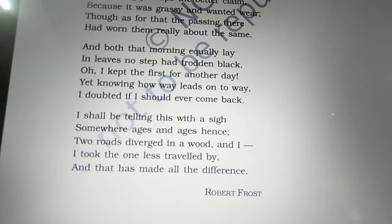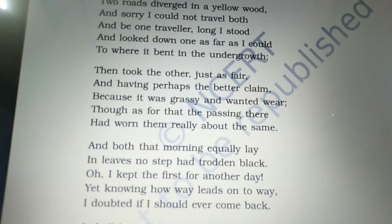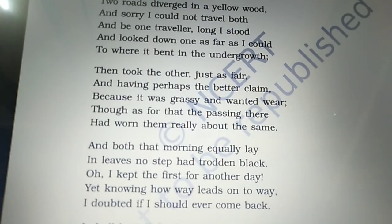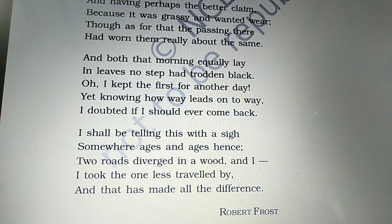Now let me tell you the poetic devices. There are lines starting with 'and' — when the same letter repeats at the start of consecutive words, that is alliteration. For example: 'wanted wear' — the W letter repeats, so that is alliteration. Similarly, 'the passing there' — the T letter repeats. 'That morning equally lay' and 'first for another day' are also alliteration. In the last stanza, 'ages and ages' repeats — that is the repetition poetic device. That was your poem — I hope you all understood. Thank you.